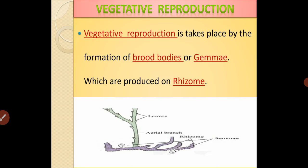Let's start with vegetative reproduction. In case of Silotum, vegetative reproduction takes place by the formation of Gemmae on the rhizome. Gemmae is also called as the brood bodies. These Gemmae or brood bodies are produced on the surface of the rhizome.